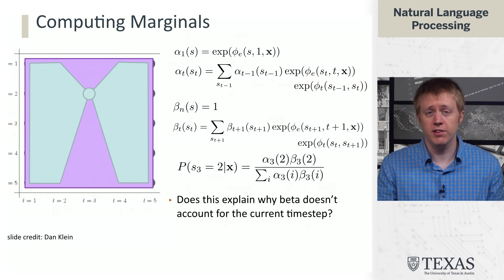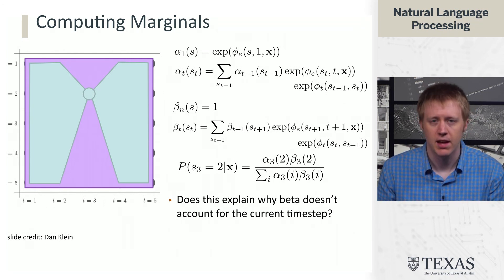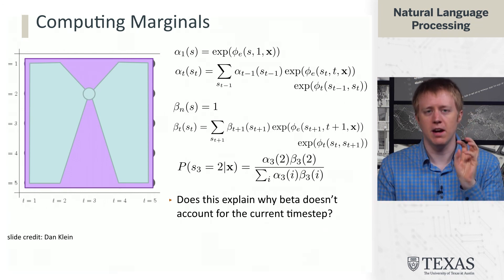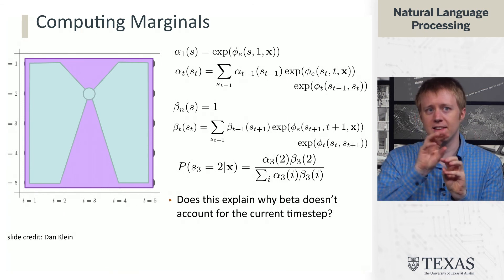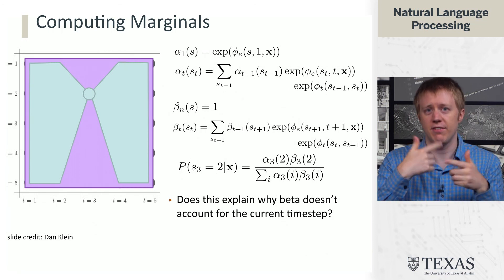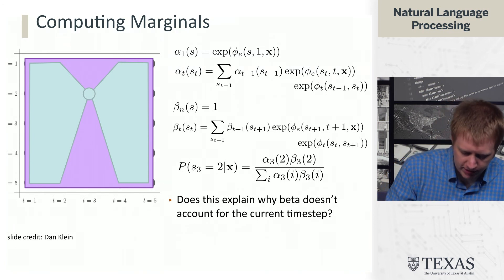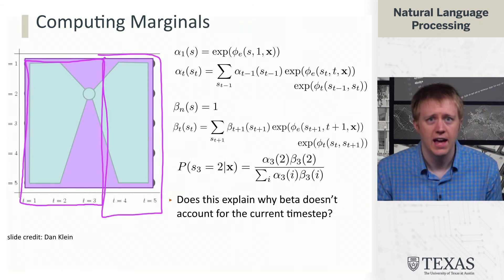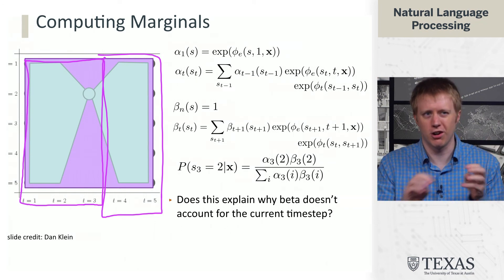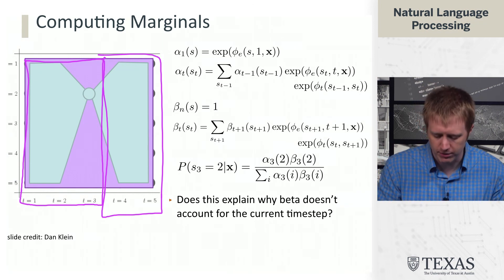So a couple of things. First is that now we understand why beta doesn't account for the current time step. And the reason is, if we did, we would be double counting the emissions at time step three. If we define beta exactly like alpha, we would essentially have that term be showing up twice. But instead, the way we think about it is that the alphas are keeping track of the probabilities here and the betas are only keeping track of these probabilities. And you should be able to convince yourself that all the terms are accounted for. We do get all the transitions in there and we do get all the emissions in there without double counting.